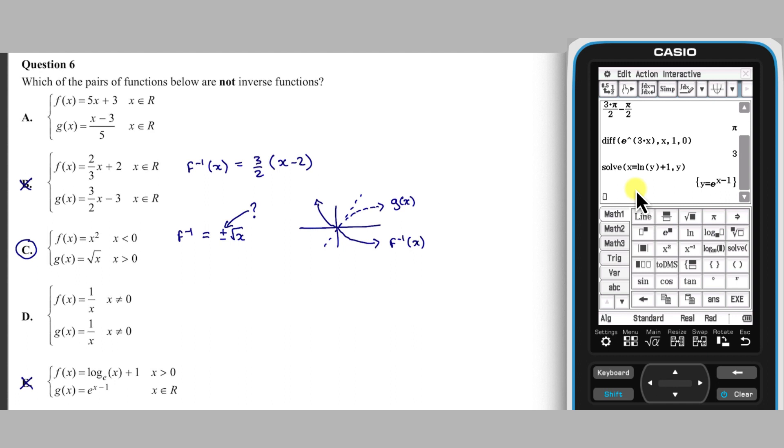Another possible approach to this question, which will not be demonstrated here, would be to graph each of these pairs of functions in the Graph and Table app and observe which pairs are not reflections through the line y equals x.